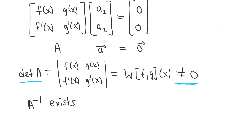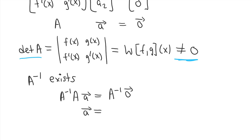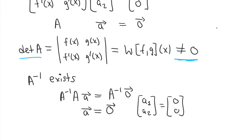Since A inverse exists, I can multiply both sides of A·[a₁, a₂] = 0 by A inverse on the left. The left side simplifies to [a₁, a₂] and the right side gives the zero vector. So the only solution for a₁ and a₂ is the trivial solution — both equal to zero. That is precisely what it means for f and g to be linearly independent, and that concludes the proof.